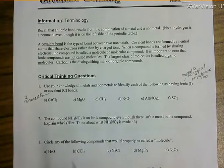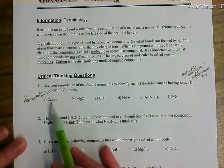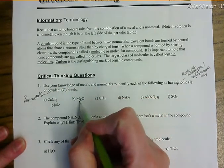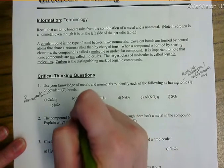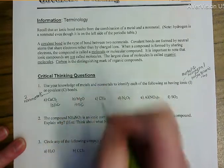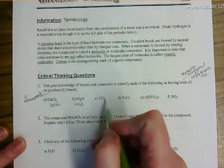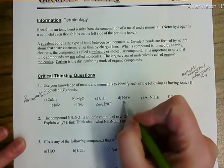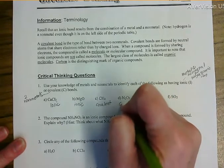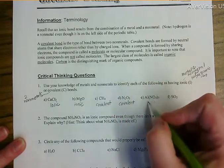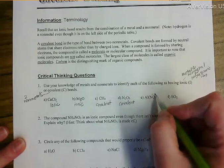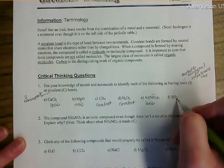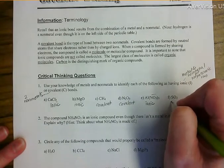Calcium is in group 2A so it's a metal — this would be ionic. Magnesium is in group 2A so it's a metal — this would also be ionic. Carbon is a nonmetal and hydrogen is a nonmetal, so this is covalent. Nitrogen and oxygen are both nonmetals, so this is covalent. Nitrate is a polyatomic ion you have memorized, so this is an ionic compound. Sulfur and oxygen are both nonmetals, so this is covalent.